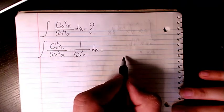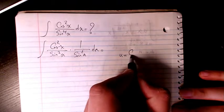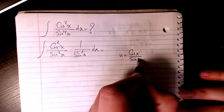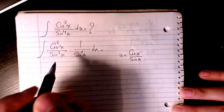Then in here I can consider u as cosine x over sine x, which is the same as cotangent. This one is cotangent squared.